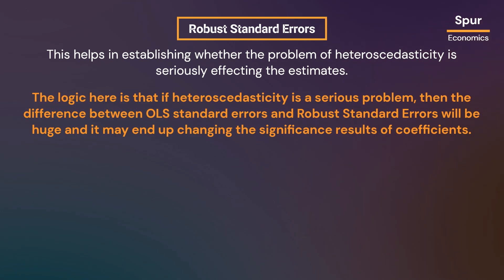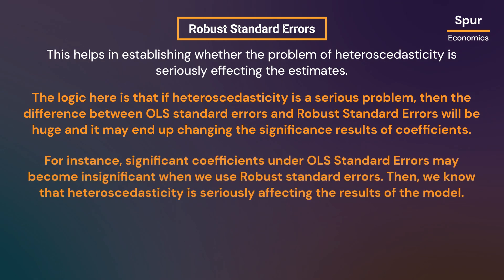The logic here is that if heteroscedasticity is a serious problem, then the difference between OLS standard errors and robust standard errors will be large, and we may end up changing the significance results of coefficients. For instance, significant coefficients under OLS standard errors may become insignificant when we use robust standard errors.